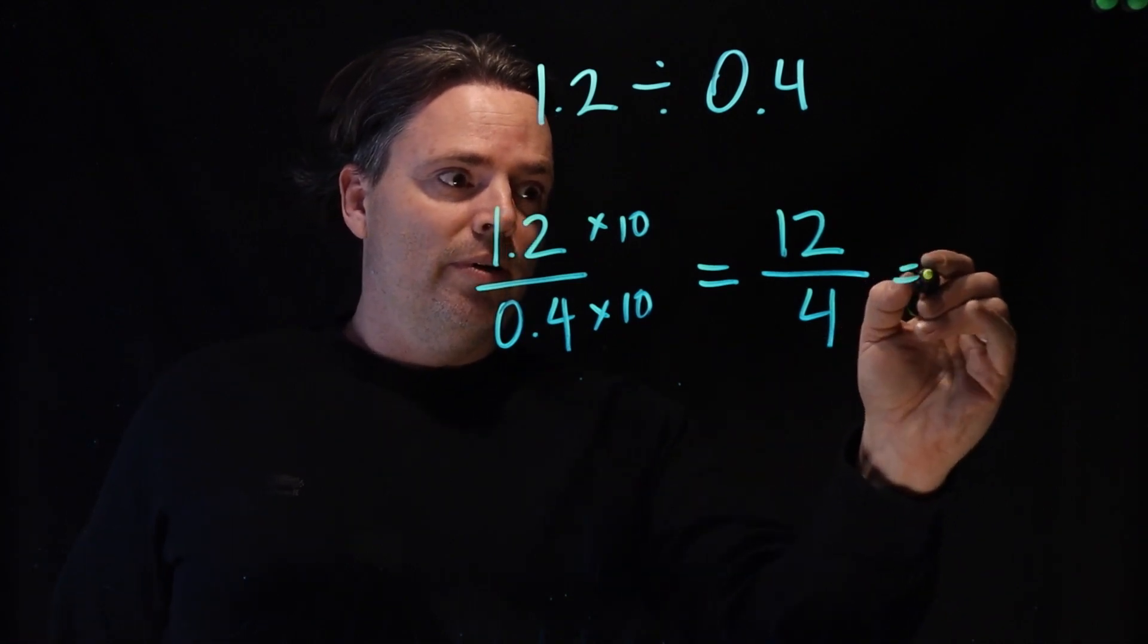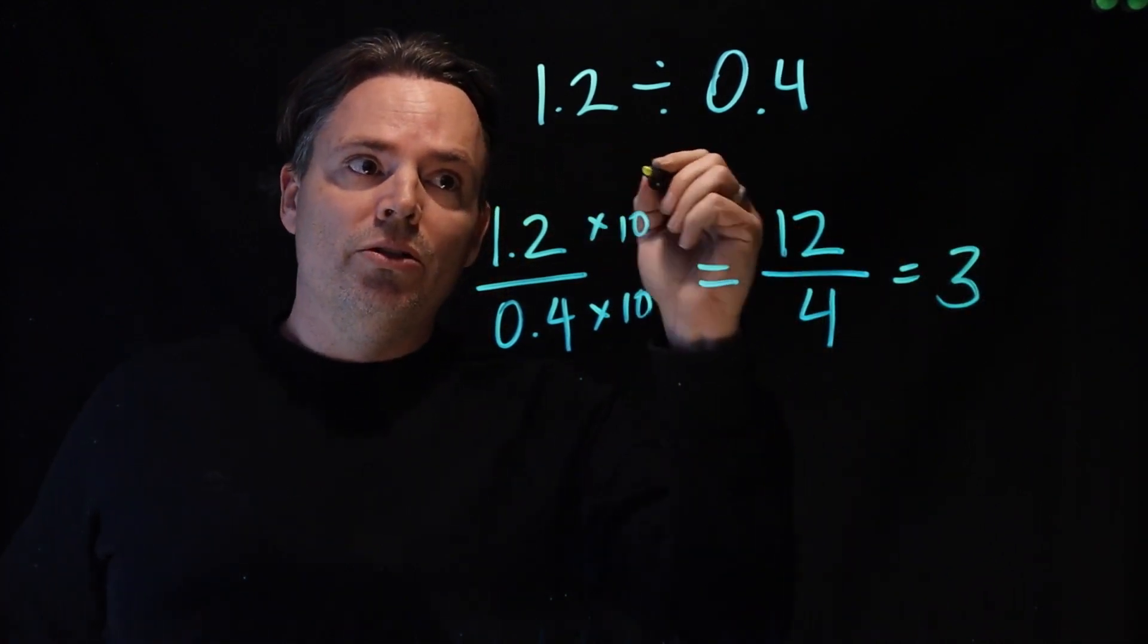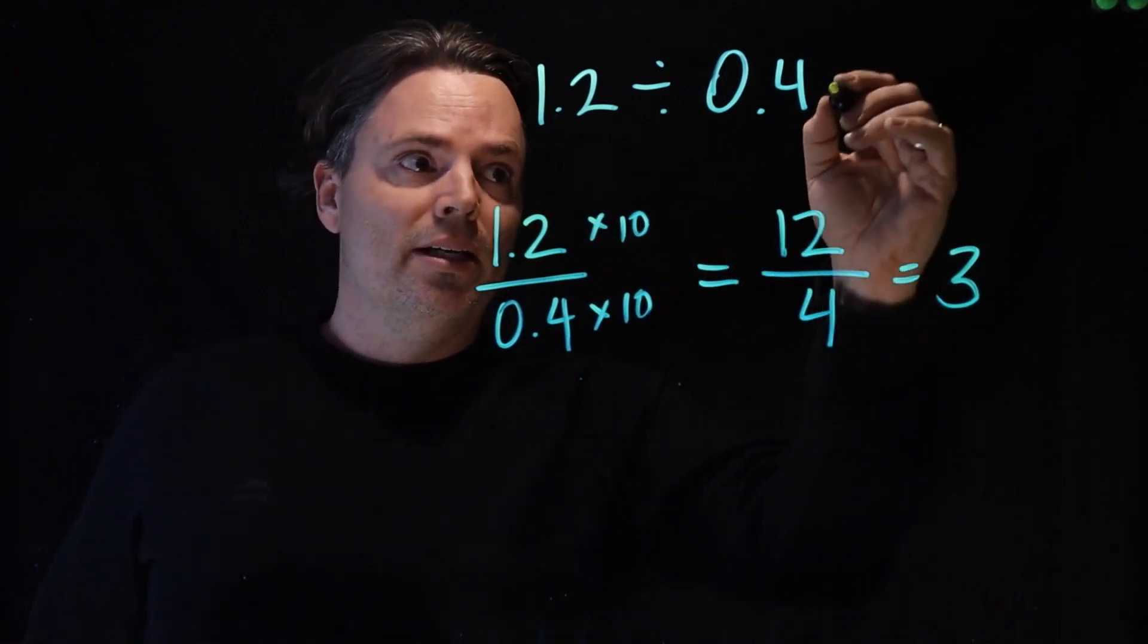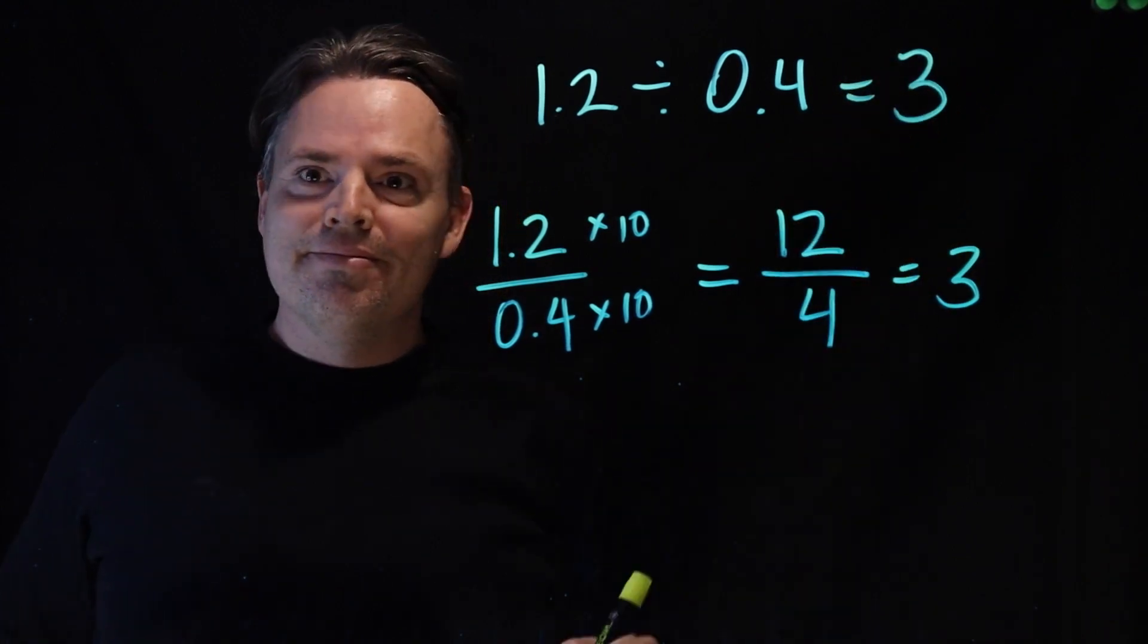Then she said, that's really easy, it's 3. So 1.2 divided by 0.4 is equal to 3. Nice idea.